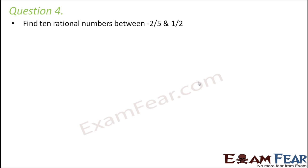Question number 4: Find 10 rational numbers between -2/5 and 1/2. So again in this case if you look at it, the lower limit and the upper limit, they have different denominators. So first of all we have to change their denominators in such a way that both of them have same denominators. So how do we do that?